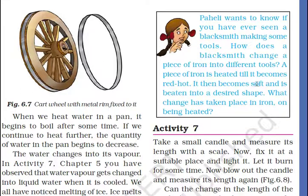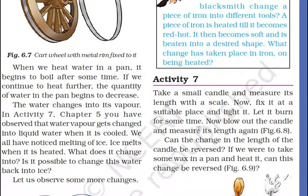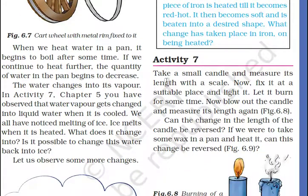A piece of iron is heated till it becomes red hot. It then becomes soft and is beaten into a desired shape. So what changes have taken place in iron on being heated? It expands and becomes soft, and on cooling it becomes hard again.